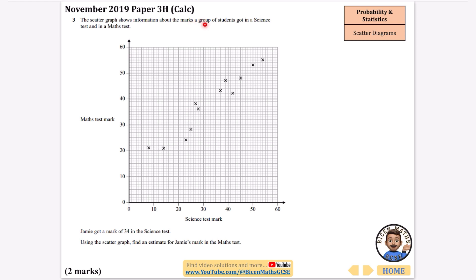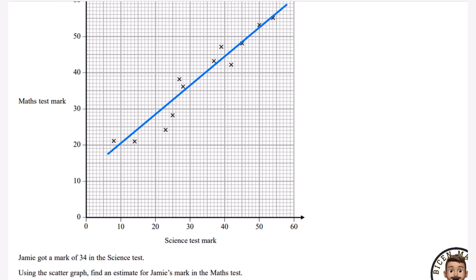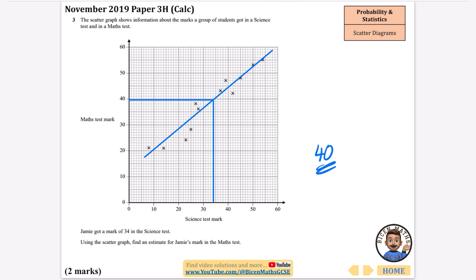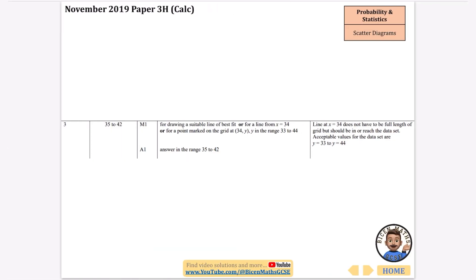We've got a scatter graph about the mark a group of students got in a science test and a maths test. Jamie got a mark of 34 in the science test. Use the scatter graph, find an estimate for Jamie's mark in the maths test. You do need to draw a line of best fit. You want it to go through as many of the points as possible. He got a 34 in the science test. If I draw up from 34 to the line and then draw across, it looks like his maths test mark is going to be about 39 or 40. So I'm going to say that his mark in the maths test is going to be 40.